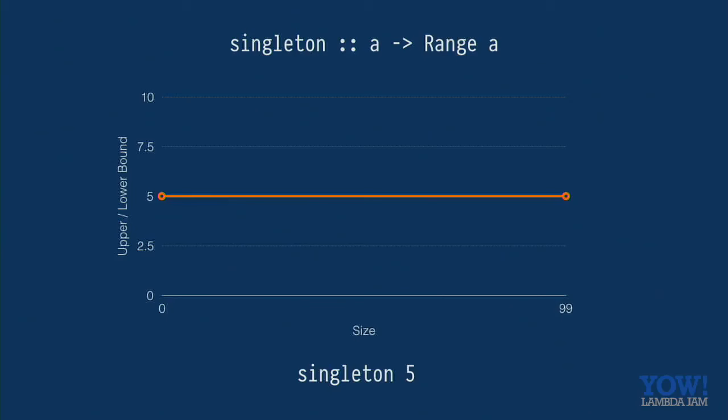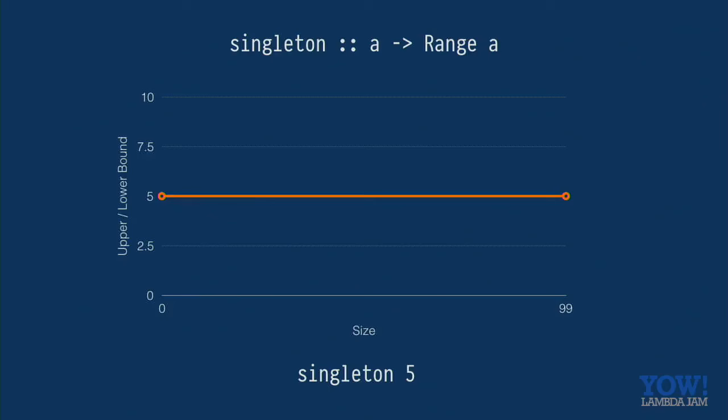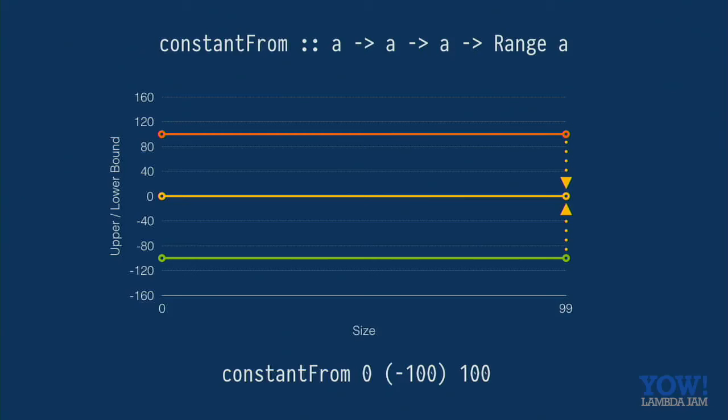So constant zero 10 is also unaffected by the size parameter. But so it gives you a range from zero to 10, but then when it's shrinking, it shrinks towards zero. It shrinks towards the first parameter. If we flipped the arguments, then it would shrink towards 10 instead, which is interesting. Constant from, it takes three arguments is unaffected by the size, but it shrinks towards this first argument. So we can say the range is minus a hundred to a hundred and then shrinking towards zero. Now it starts to get interesting. So linear is affected by the size parameter. So if we have this linear range 32 to 1024, as the size increases, the range slowly increases to 1024 to 32. But when we shrink, we always shrink to 32. So this gives you quite a bit of control over how things shrink and how the bounds increase as the size increases.